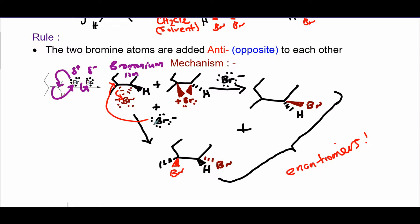That leads to the Br falling off as Br⁻. You get two possible intermediates depending on the approach — if you're attacking from the top face or bottom face. If attacking from the bottom face you get this bromonium intermediate; if attacking from the top face you get this bromonium intermediate. To get the product, the bromide that fell off will attack from the opposite side to the three-membered bromonium ring, because the three-membered bromonium ring creates steric hindrance on that side.